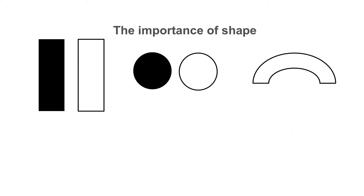The thoracic anatomical structures are three-dimensional and course in various directions. Depending on their anatomical course and geometry and the direction of the X-ray beam, they will form shapes that are predictable. This forms the basis of object recognition on chest X-ray examination.